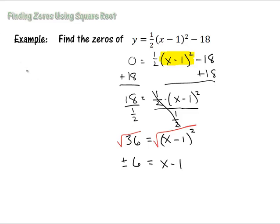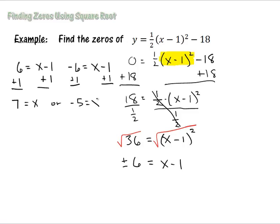So now I go write my two equations. Six equals x minus one or negative six equals x minus one. I'll add one to both sides to get all those ones to cancel. And that gives me seven equals x or negative five equals x.